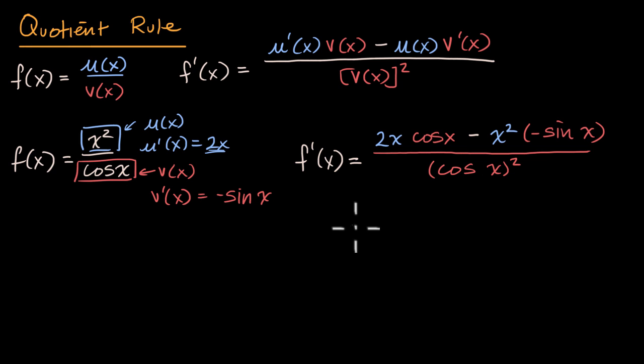This is going to be equal to - let's see - 2x times cos(x). Negative times a negative is a positive, plus x². x² times sin(x). All of that over cos²(x), which I could write like this as well. And we're done.